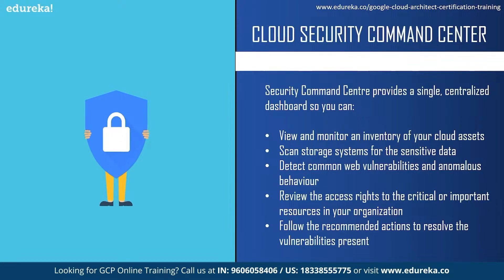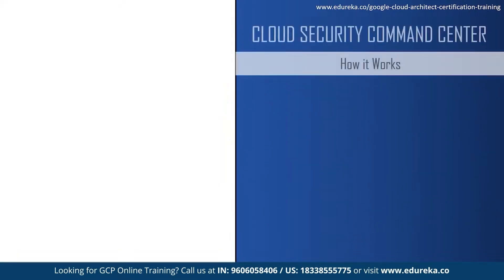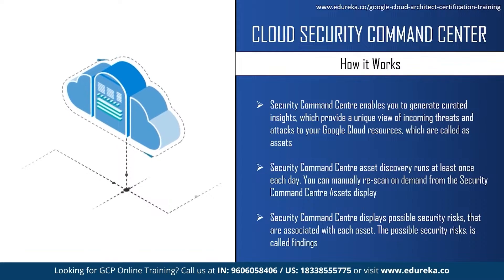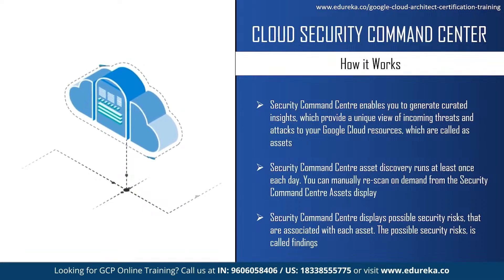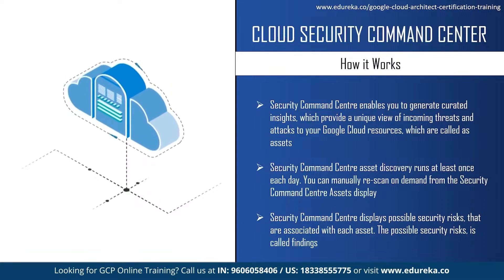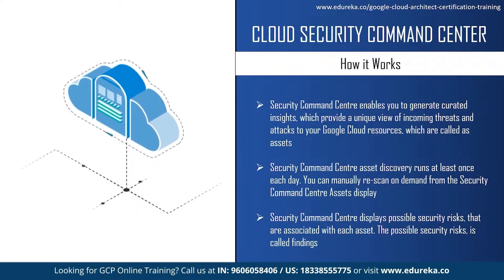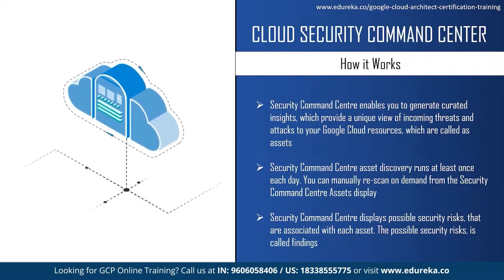Now let us see how the Security Command Center works. Security Command Center enables you to generate curated insights which provide a unique view of incoming threats and attacks to Google Cloud resources, called assets — resources like organizations, projects, instances, and applications. The asset discovery runs at least once daily; you can also manually rescan on demand from the Security Command Center assets display. It then displays possible security risks associated with each asset, called findings. These findings come from security sources including Security Command Center's built-in services, third-party partners, and your own security detectors and finding sources.